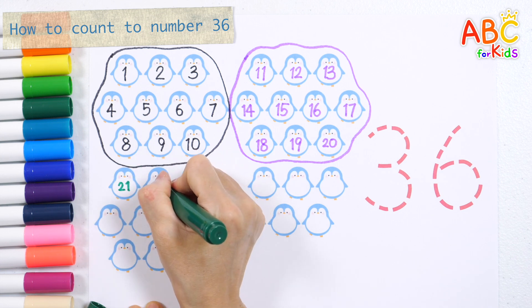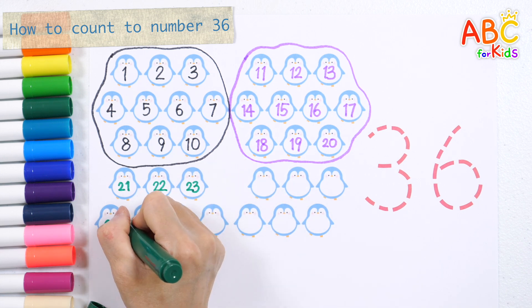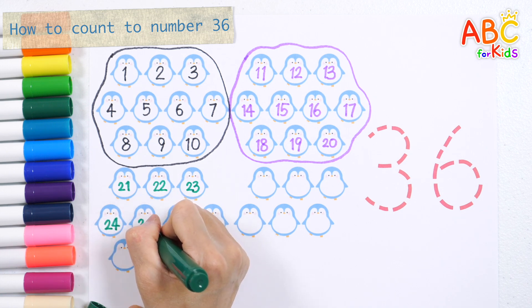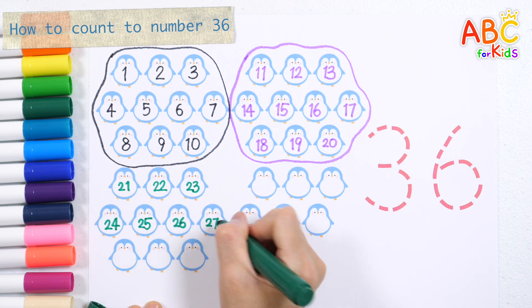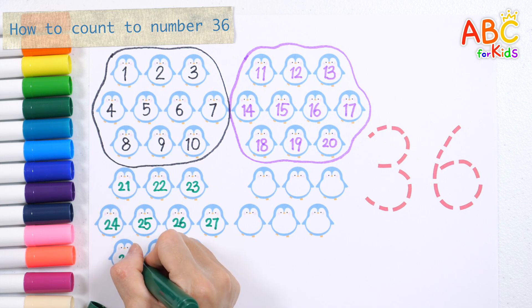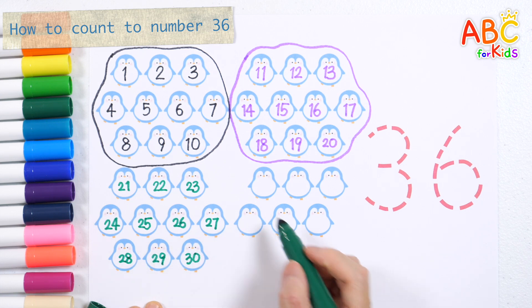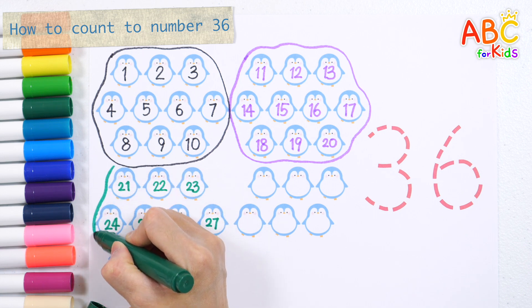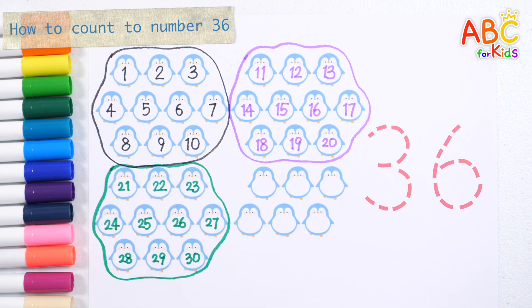Twenty-one. Twenty-two. Twenty-three. Twenty-four. Twenty-five. Twenty-six. Twenty-seven. Twenty-eight. Twenty-nine. Thirty. Thirty penguins.